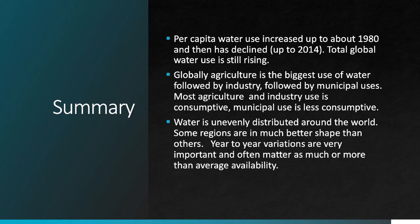Wrapping all of this up: per capita water use increased up to about 1980 and then declined through about 2014 — global water use is becoming more efficient, but total use is still rising because population is going up. Agriculture is the biggest use of water, followed by industry, followed by municipal uses. Agriculture and industry are largely consumptive, whereas much of municipal use is less consumptive and therefore less impactful on freshwater supplies. Lastly, water is really unevenly distributed around the world — some regions are in good shape, others are not — and year-to-year variations in water supply often matter as much or more than average availability. This will definitely be something we come back to when we get to talking about climate.